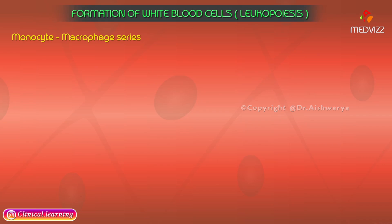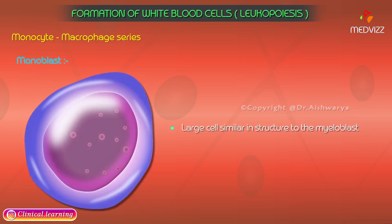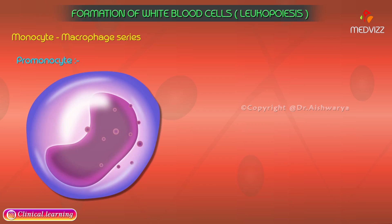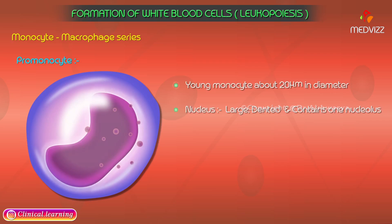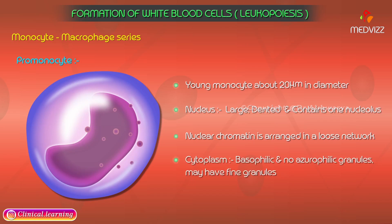The monocyte-macrophage series is described separately due to different morphological stages, which include monoblast, pro-monocyte, and monocyte. The monoblast is a large cell similar in structure to the myeloblast, from which it cannot be distinguished on morphological grounds alone. The pro-monocyte is a young monocyte about 20 micrometers in diameter; its nucleus is large and dented and contains one nucleolus, with nuclear chromatin arranged in a loose network.